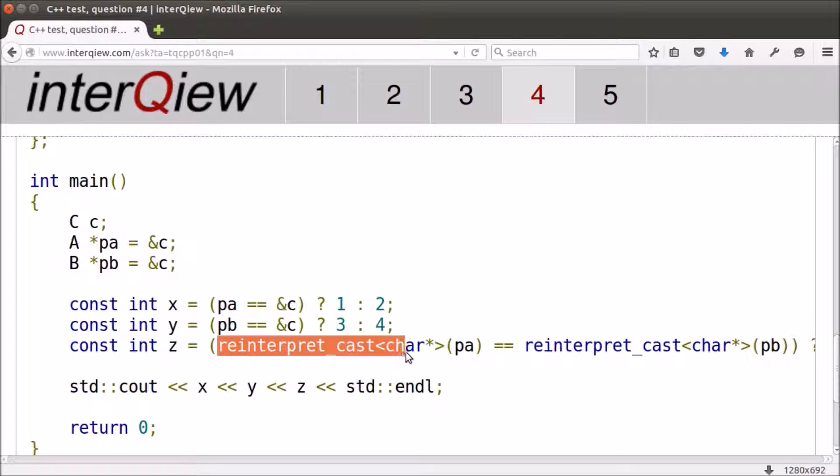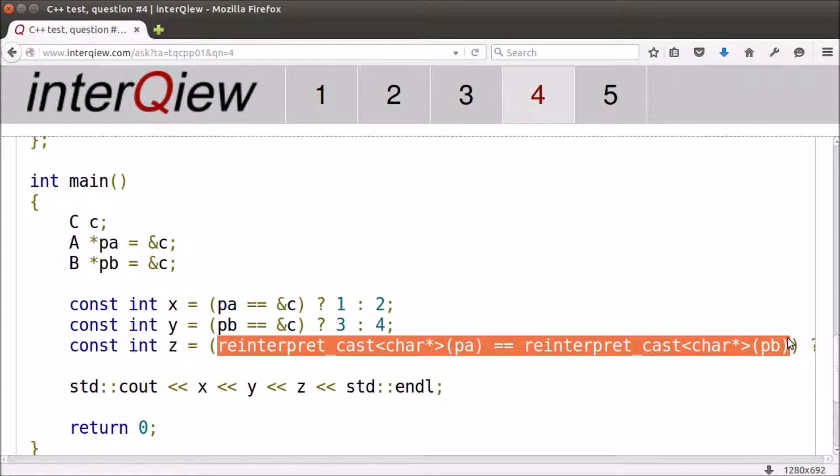In the third comparison, we have pointers of two base classes. They are converted to char pointers using reinterpret_cast in order to compare the memory addresses where they are pointing to. Without reinterpret_cast, the compiler would issue an error since it can't convert one type to the other.